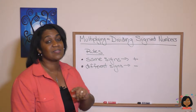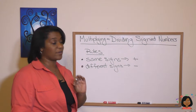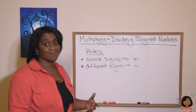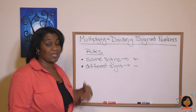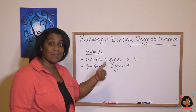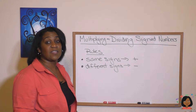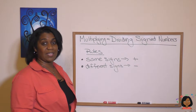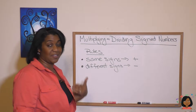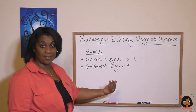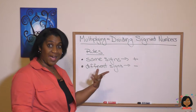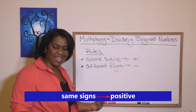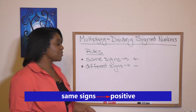When we are multiplying numbers that have the same signs — whether that be positive times positive, the answer will be positive. Or if it's a negative times a negative, the answer will be positive. So if the signs are the same, the answer is positive.